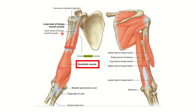Looking at the pictures: the short head of biceps brachii arises from the coracoid process and the long head arises from the supraglenoid space. Coracobrachialis arises from the coracoid process and ends in the humerus. The brachialis muscle arises from the middle part of the anterior surface of the humerus and inserts into the tuberosity of the ulna, while biceps brachii inserts into the radial tuberosity.